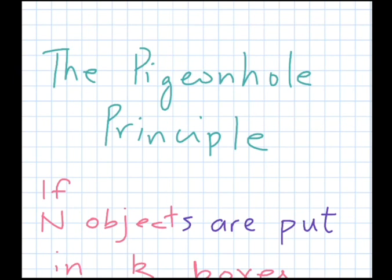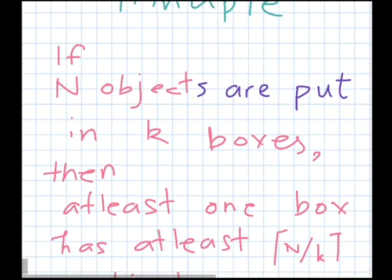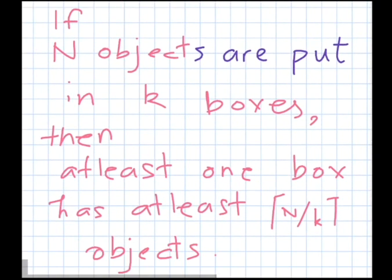In this video we will talk about the pigeonhole principle. The definition goes like this: if we have n objects and we have to put them in k boxes, then at least one box has at least the ceiling of n over k objects. Now this looks very technical but it's very common sense kind of thing.